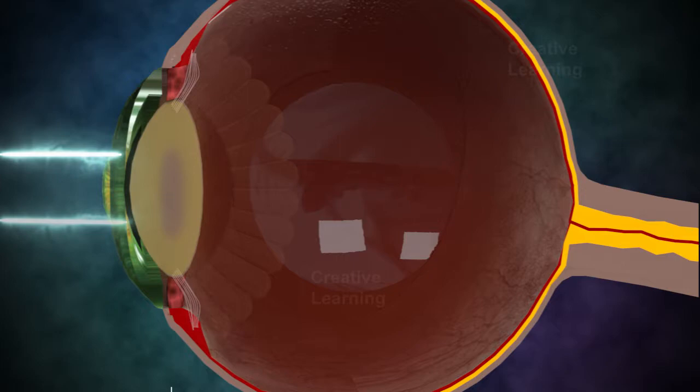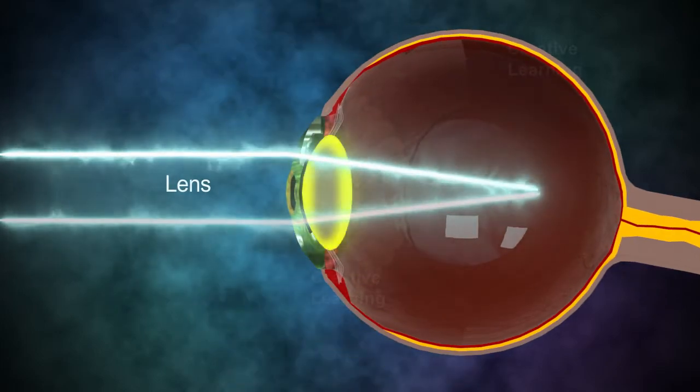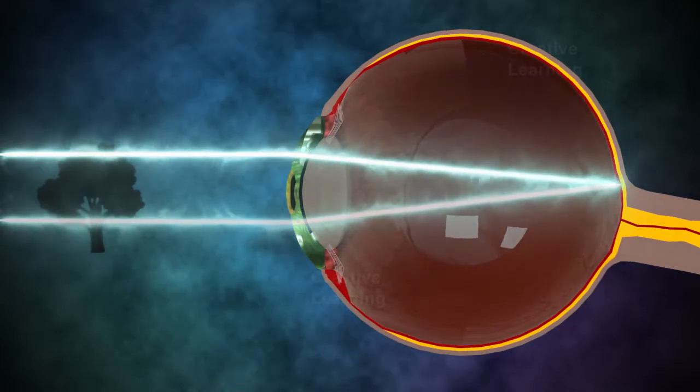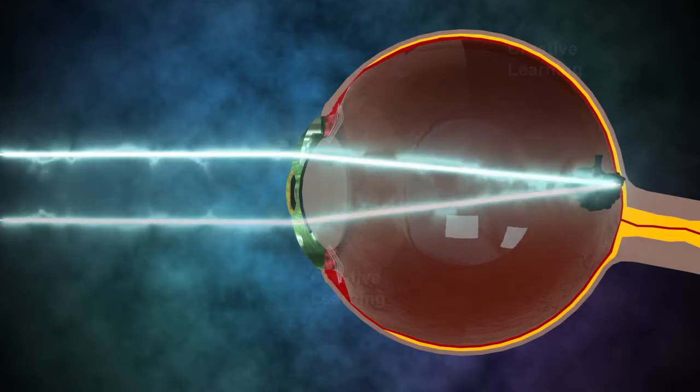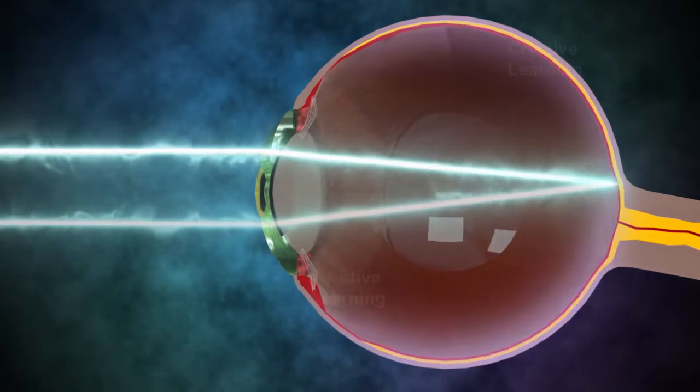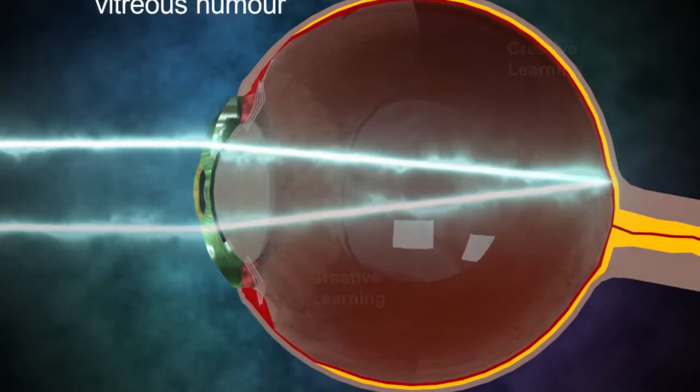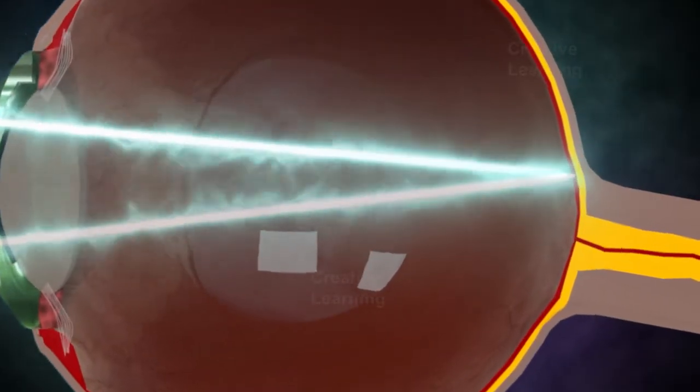Light rays are converged by the crystalline lens located behind the iris to a nodal point, where the image of the object is reversed and inverted. The light continues through the vitreous humor, a clear gel substance that fills the eye, and focuses on the retina.